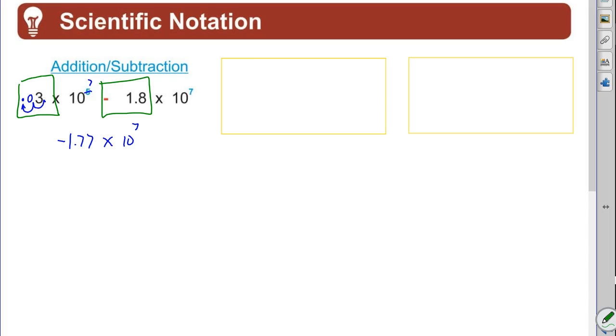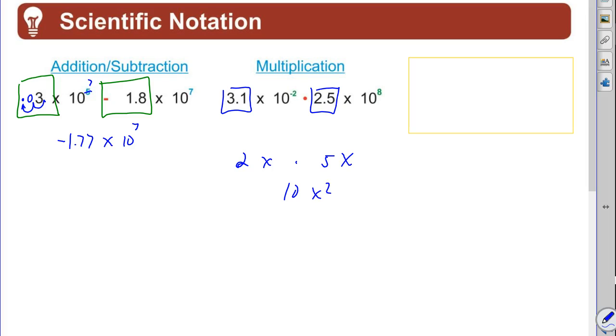Alright, that's addition or subtraction. How about multiplication? The powers of ten don't matter in multiplication, so what you're going to do is multiply coefficient times coefficient. And if you remember, the analogy is if you had 2x times 5x, you're going to go 2 times 5 is 10, x times x is x squared. That's the concept we're dealing with.